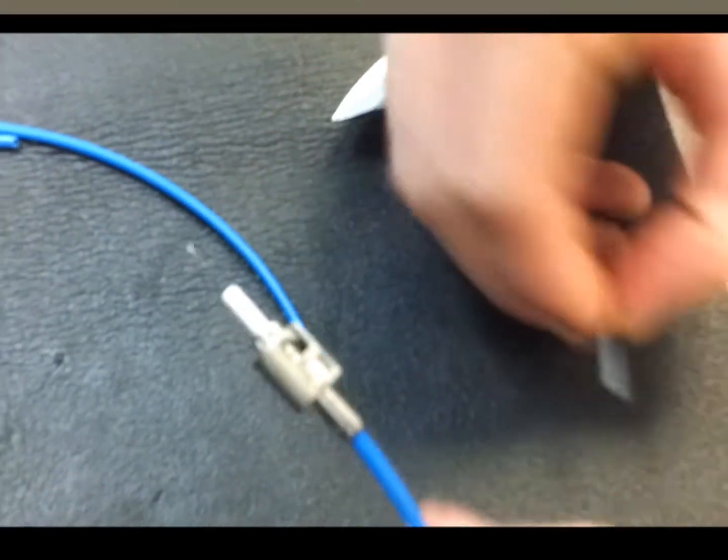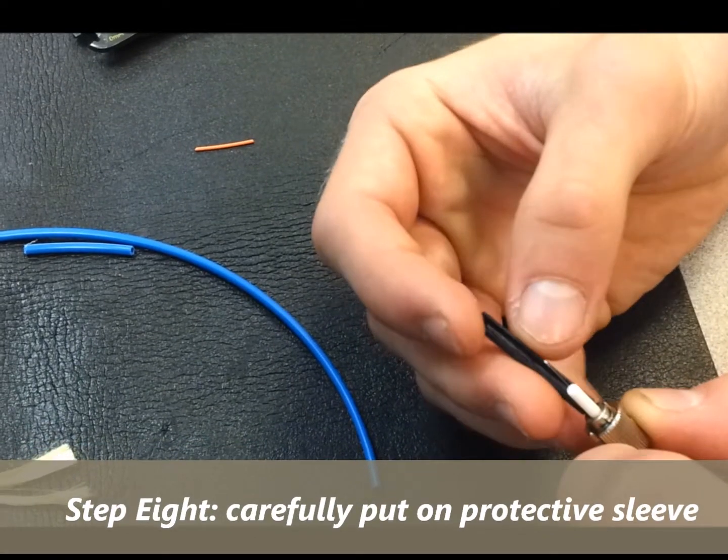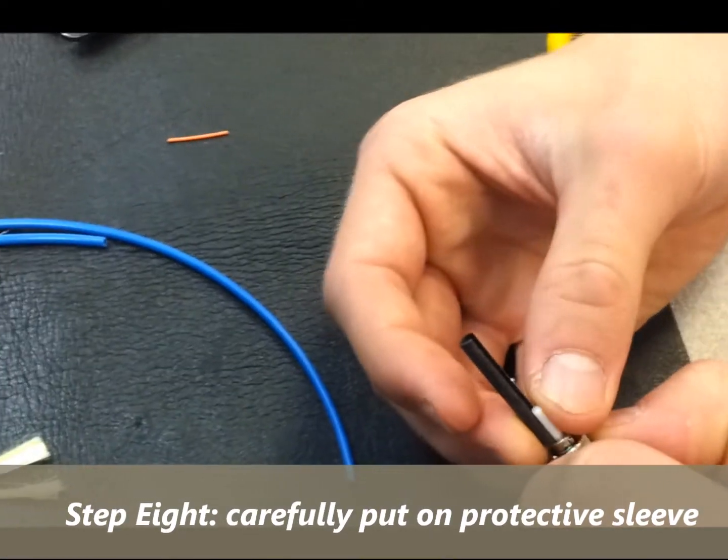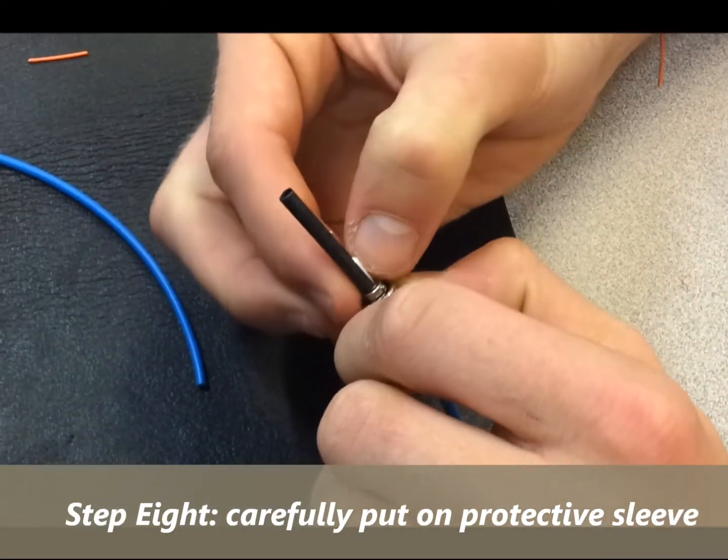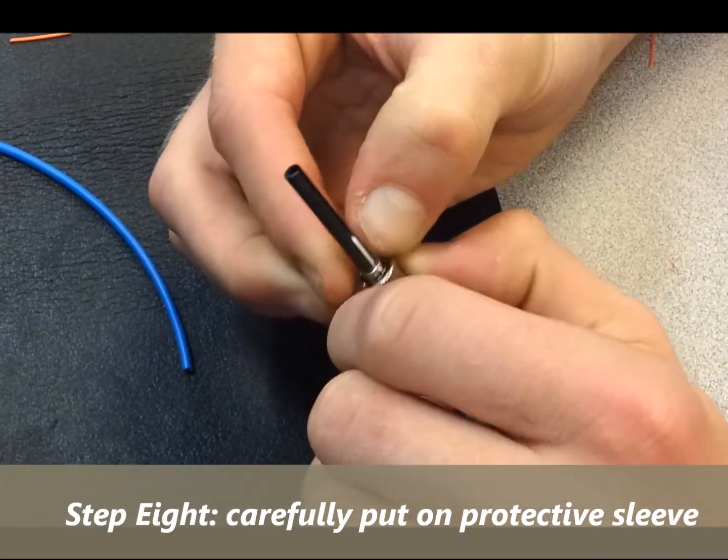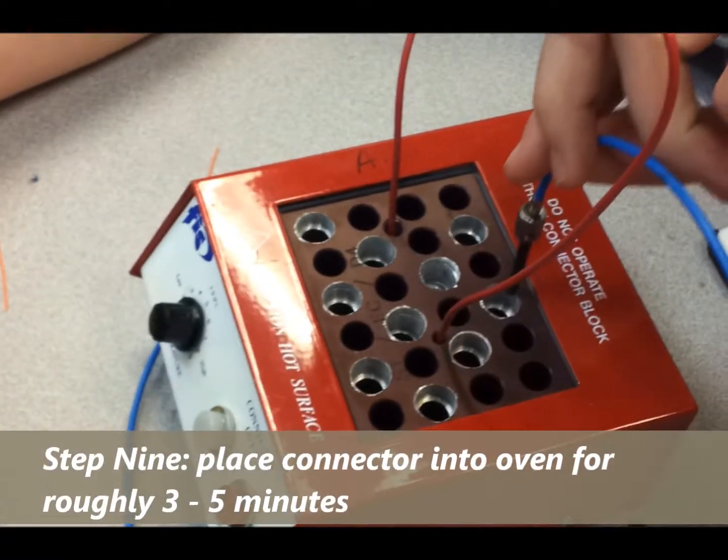We're going to put the protective sleeve on first to protect the glass, and now we're going to put it into the curing oven for three to five minutes.